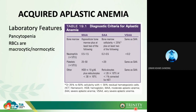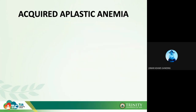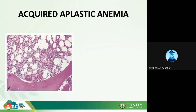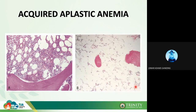Very severe aplastic anemia is when all of those criteria are present in the patient, which can be fatal. A normal cellular bone marrow shows both adipose (yellow bone marrow) and a majority of red bone marrow capable of hematopoiesis. In acquired aplastic anemia, there is already a shift from red bone marrow to yellow bone marrow, which is an evident case of aplastic anemia — the opposite of normal regression.